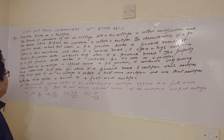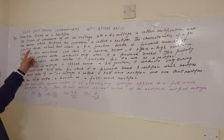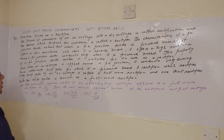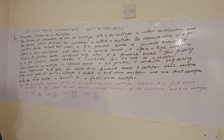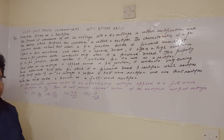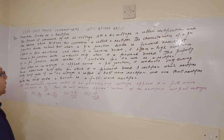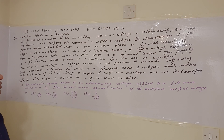Now the question is junction diode as a rectifier. This is a case study based problem. The process of conversion of an AC voltage into a DC voltage is called rectification, and the device which performs this conversion is called the rectifier.